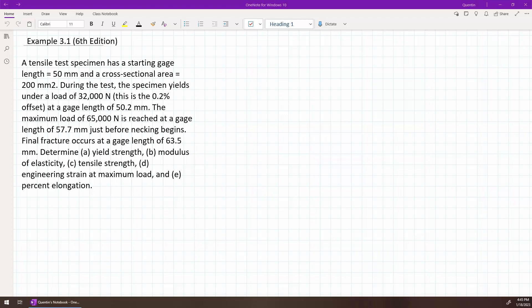During the test, the specimen yields under a load of 32,000 newtons, and specifically this is a 0.2% offset at a gauge length of 50.2 millimeters. The maximum load of 65,000 newtons is reached at a gauge length of 57.7 millimeters just before necking begins, and then the final fracture occurs at a gauge length of 63.5 millimeters.